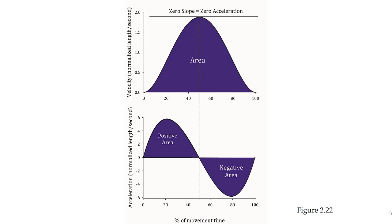Now let's see what the areas under the curves represent. The area under the velocity-time curve is going to represent the displacement. Since we are moving in a positive direction, we are going to end up having a positive displacement.